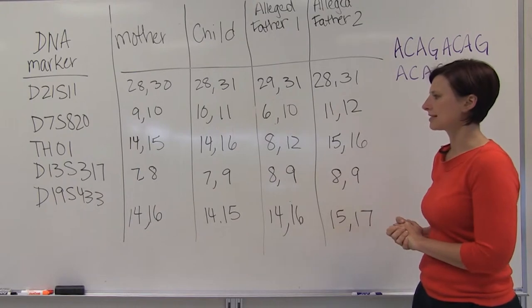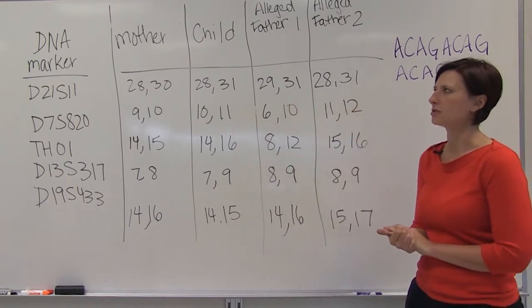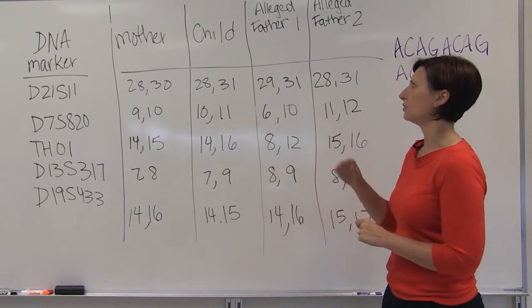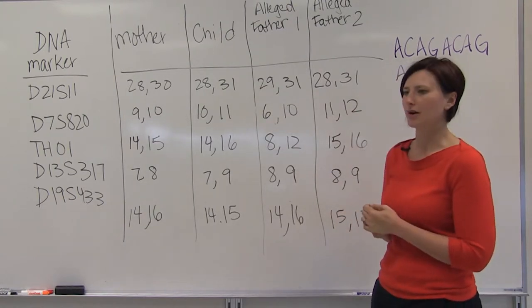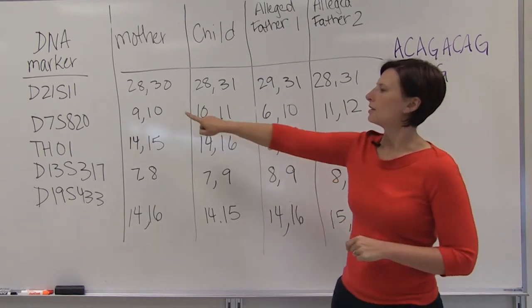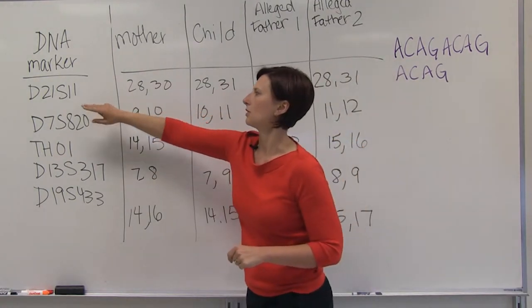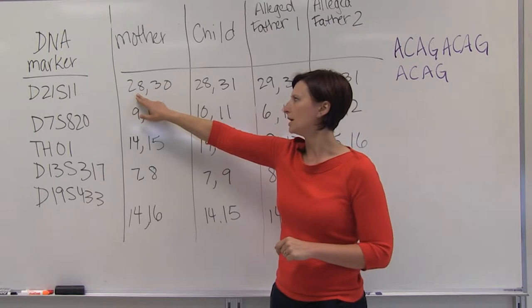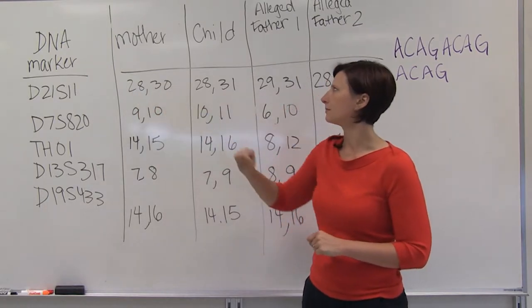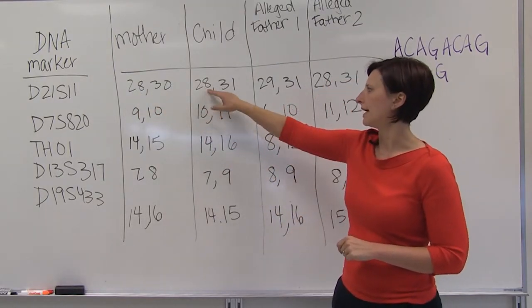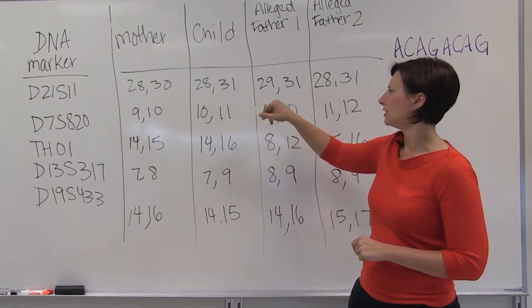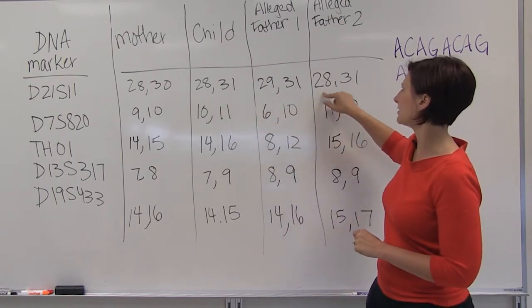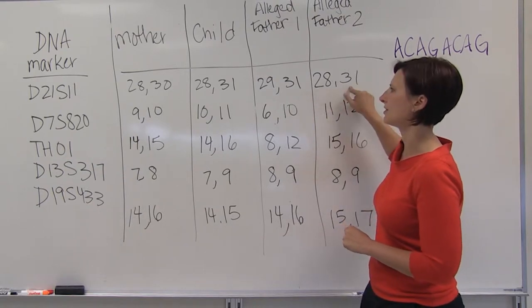So let's walk through this example of two alleged fathers, a mother and a child, to determine whether or not one of these fathers is the father and which one it is. The mother at one particular loci has one fragment of 28 repeats and one of 30. The child has 28 and 31. The first father has 29 and 31, and the second alleged father has 28 and 31.